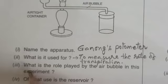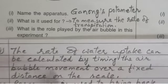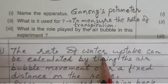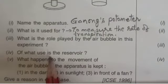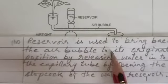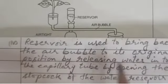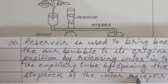What is the role played by the air bubble in this experiment? The rate of water uptake can be calculated by timing the air bubble movement over a fixed distance on the scale. What is the use of the reservoir? It is used to bring back the air bubble to its original position by releasing water into the capillary tube by opening the stopcock of the water reservoir.